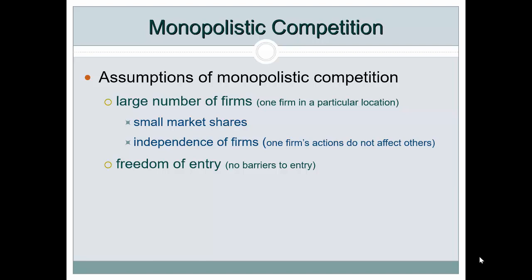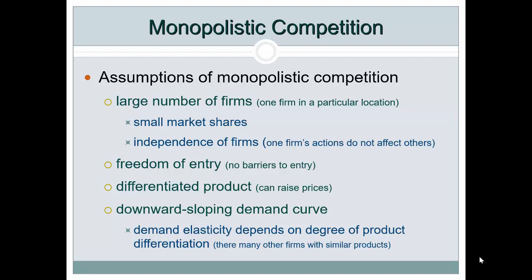Importantly, products are differentiated. In perfect competition, firms aren't able to differentiate, but here we relax that assumption. Firms can differentiate by branding, adding flavor, tweaking design, offering something extra, improving how the service is provided, advertising, and developing new products. This allows firms to raise their prices — they are able to charge the price they want, which leads to a downward-sloping demand curve.